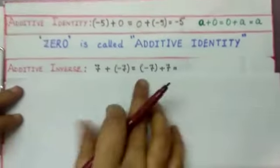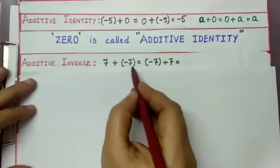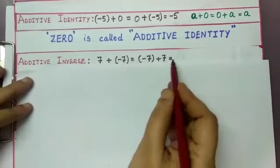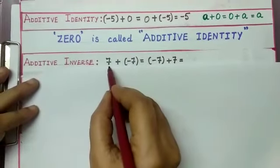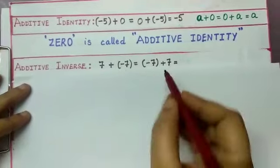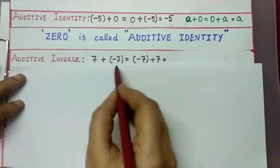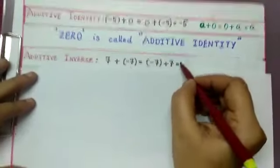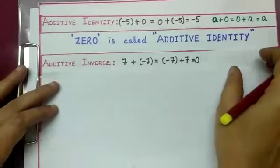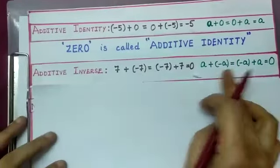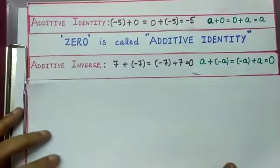Now, the additive inverse: 7 plus minus 7 equals minus 7 plus 7 equals 0. Here 7 is the additive inverse of minus 7, and minus 7 is the additive inverse of 7. The sum of a number and its additive inverse is always 0. In general, for any integer a, a plus minus a equals minus a plus a equals 0.